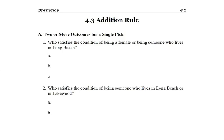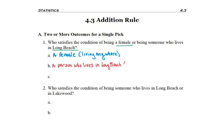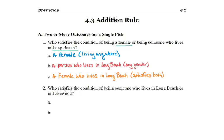Problem one: who satisfies the condition of being a female or being somebody who lives in Long Beach? If we're just picking one person, a female living anywhere satisfies our condition. Or that one person could be someone who lives in Long Beach of any gender. Or we could pick a female who lives in Long Beach, satisfying both conditions. So we pick one person but we're looking for multiple things.